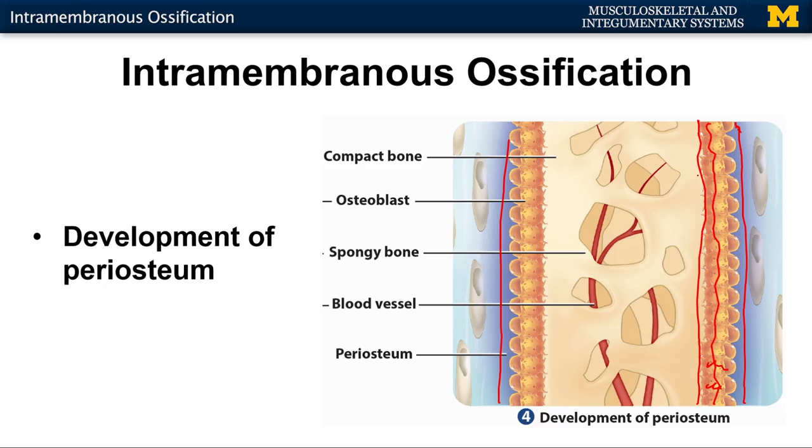So that's it in terms of intramembranous ossification — you go from the mesenchymal skeleton, that embryonic connective tissue skeleton, directly into bone, mostly for the bones of the skull. The next presentation, we're going to talk about the type of ossification that occurs in most of the bones of the body, particularly the long bones, and that's endochondral ossification. Endochondral ossification, if you recall, has an extra step: the growth of that hyaline cartilage model that will eventually be replaced by bone.